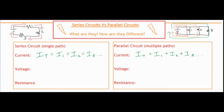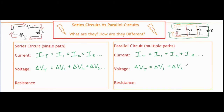Now let's take a look at the rule for voltages for a series and parallel circuit. For our series circuit, our rule is the total voltage drop is equivalent to the sum of each of the individual voltage drops through each of the different resistors. A lot of times the voltage could be written as a delta V or just a regular V. Delta V is just showing that it's a voltage drop through each of the resistors.